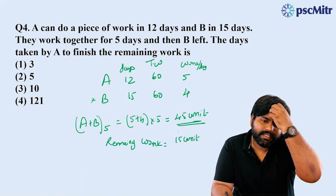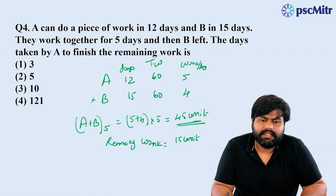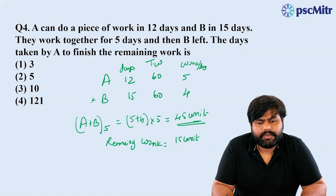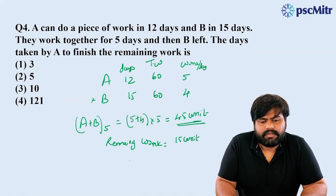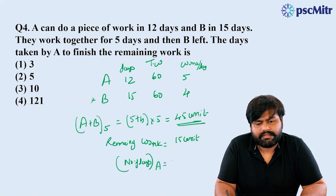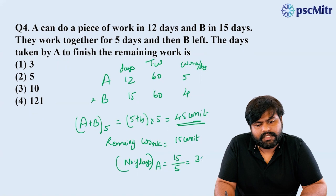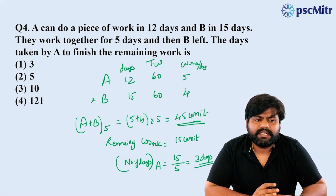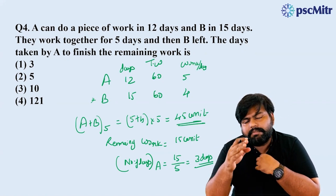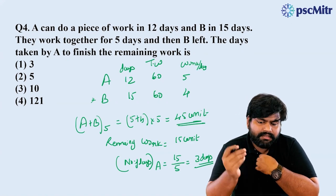The remaining work is 15 units. Total is 60 units. The remaining work is to be completed by A alone, which is 15 units. Number of days A takes: 10 divided by 5 gives 3 days.